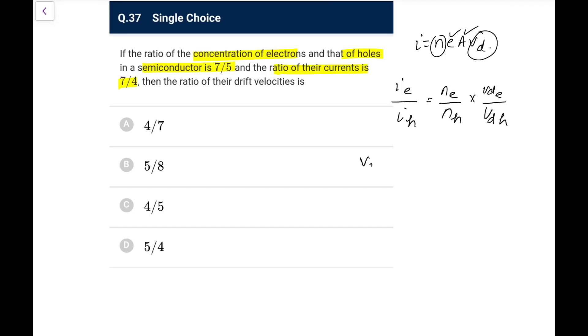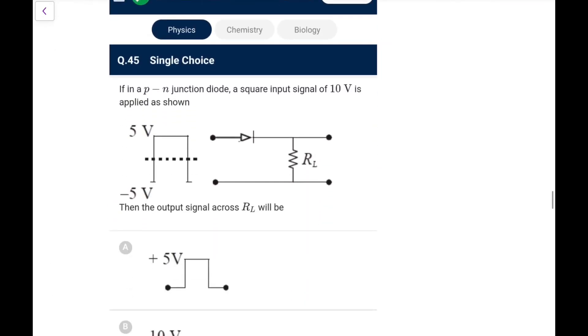So ratio of drift velocity, V_D of electron to V_D of holes is I_e by I_h into N_h by N_e. So I_e by I_h is 7 is to 5 - sorry, ratio of the current is 7 is to 4, that is given to you, and their concentration is 7 is to 5. So it would be 5 is to 7. So the answer comes out as 5 is to 4. So go for option D here, this would be the option you will have here.